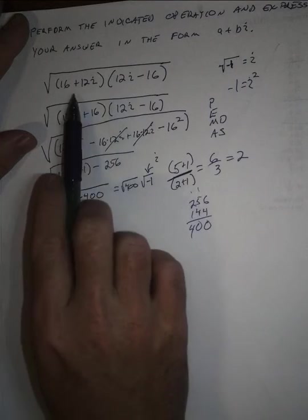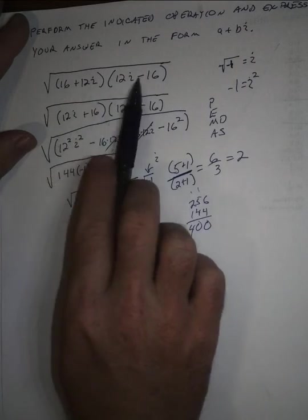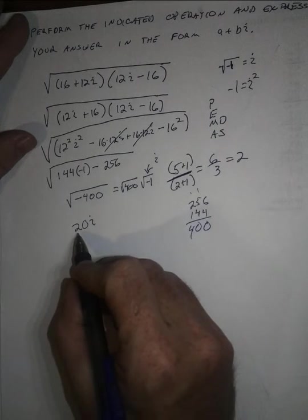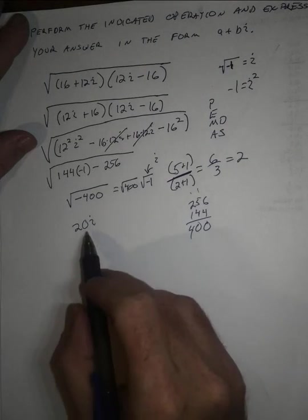This initial radical with product is a really fancy, complicated, messy way to write 20 times i.